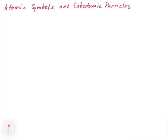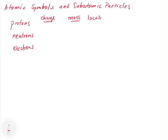The three main subatomic particles are protons, neutrons, and electrons. The things we're concerned with are their charge, their mass, and their location in the atom. Protons have a charge of positive 1. Neutrons are neutral, so they get a charge of 0. Electrons have a charge of negative 1. In an atom, the electrical balance is maintained between protons and electrons. When these get out of balance, we wind up with what we call an ion — an atom that has an overall charge.